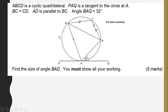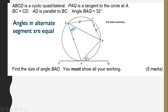ABCD is a cyclic quadrilateral. BAQ is a tangent to the circle at A, BC is equal to CD, and angle BAQ is 32 degrees. We need to find the size of angle BAD. You need to recall that the side of triangle ABD making an angle with the tangent will be equal to an angle in the alternate segment. We have reviewed that property — angles in alternate segment are equal — so this angle is equal to 32 degrees.